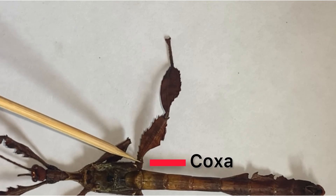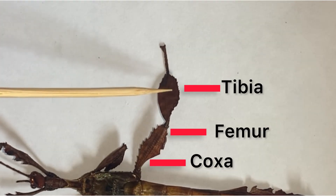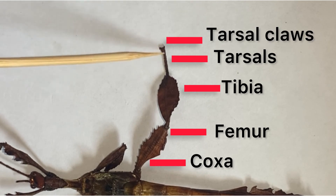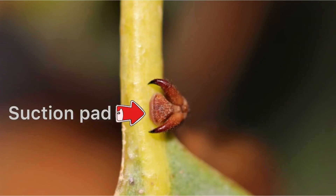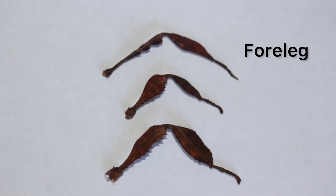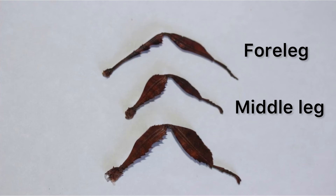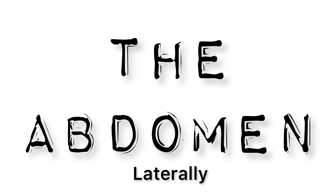Each leg consists of a coxa, a femur, a tibia, five tarsals, and tarsal claws. Between the tarsal claws lies a suction pad to further help the insect grip branches. The mesothorax contains the middle legs, which are the smallest pair of legs but have larger leg lobes compared to the forelegs. The metathorax includes the hind legs, which are the longest of the legs and have the largest lobes. This completes the lateral external view of the thorax.